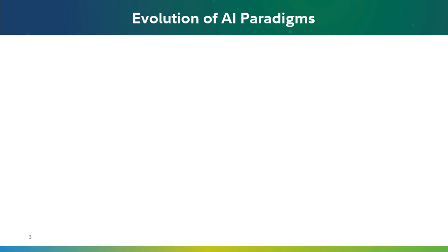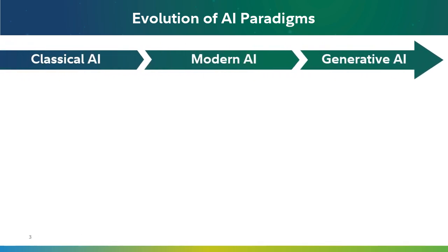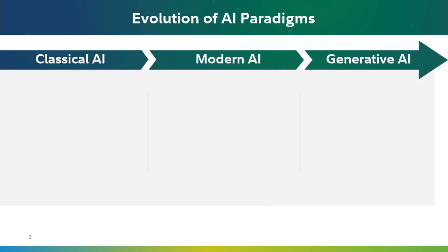So undoubtedly we are witnessing a rising trend here — but what really is happening? Why do we have such mainstream attention to AI? The answer to this question is not obvious unless we look at what's happening and the evolution behind AI paradigms from a broader perspective. Let me take the last 75 years of artificial intelligence and simplify it for you in three steps: classical AI, modern AI, and generative AI.